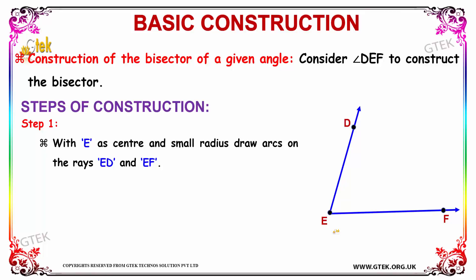the small radius arcs, that is G and you can find H. So ED has been intersected with the arc G. Similarly, EF is getting to be intersected with the arc H. We have drawn the arcs on the rays ED and EF. These arcs are getting to be intersecting the lines ED and EF with the arcs stating as G and H respectively.